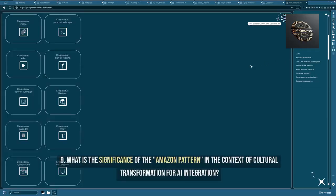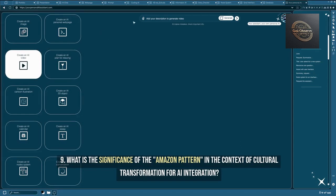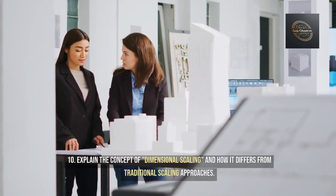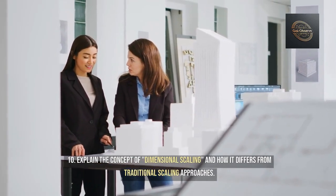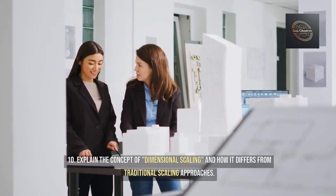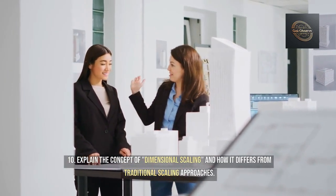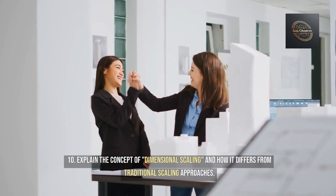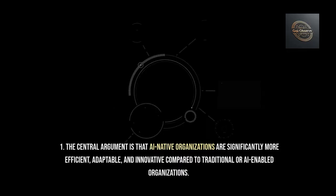Question 9: What is the significance of the Amazon pattern in the context of cultural transformation for AI integration? Question 10: Explain the concept of dimensional scaling and how it differs from traditional scaling approaches.